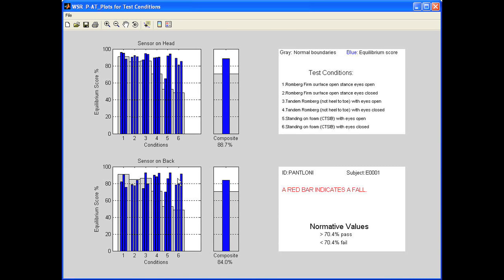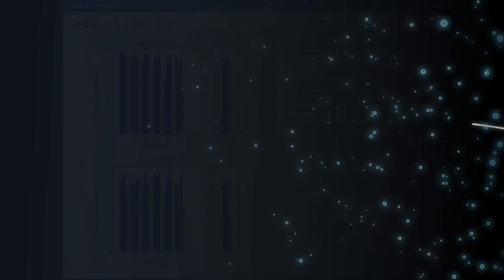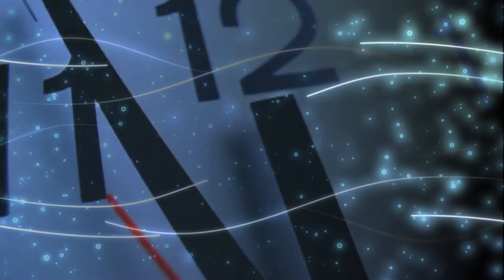Test results are automatically provided in an easy-to-read bar graph with composite percentage scores. MotionTrack takes about 10 minutes to complete and requires no special room setup. The test is made up of six 20-second conditions.